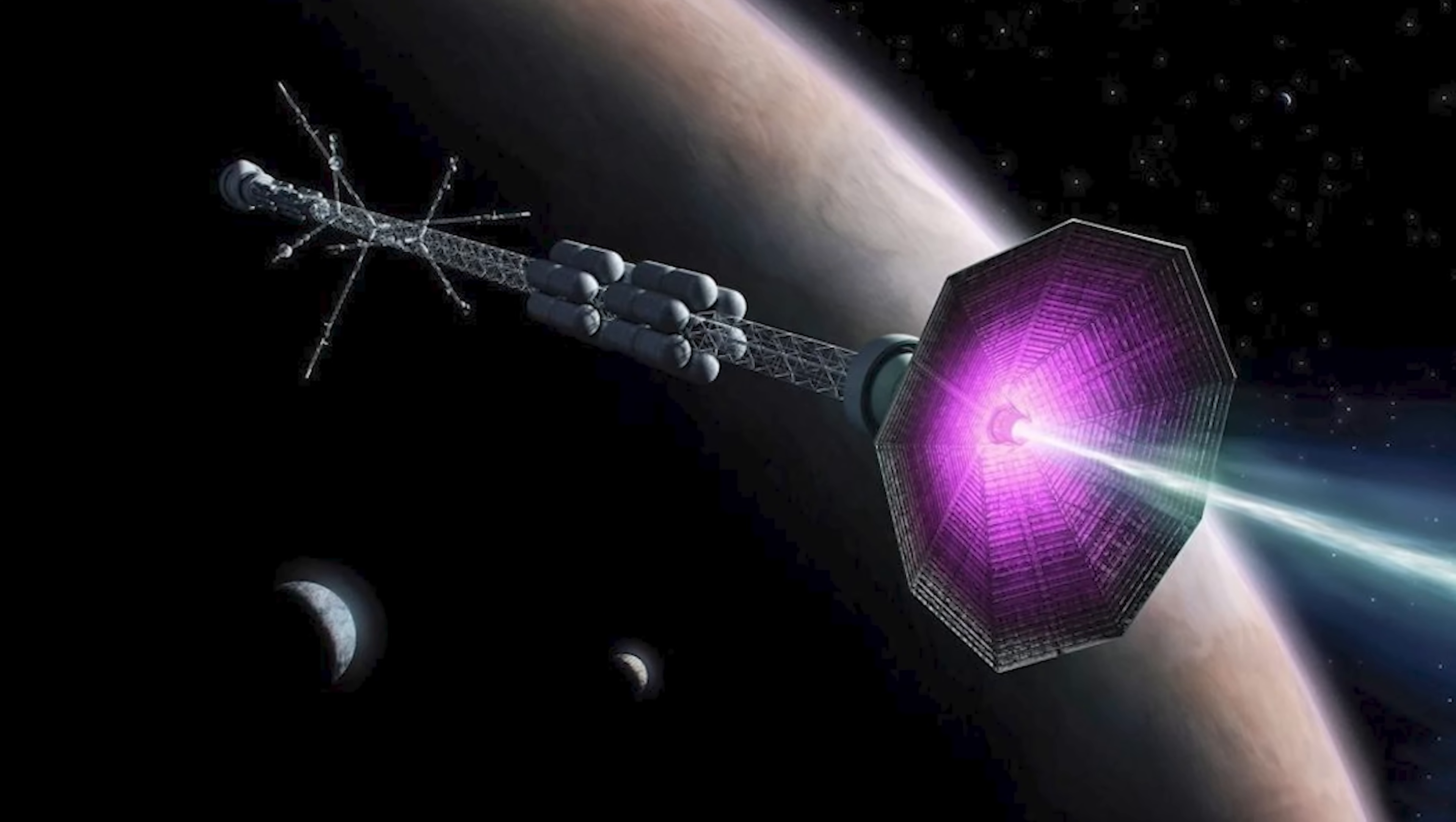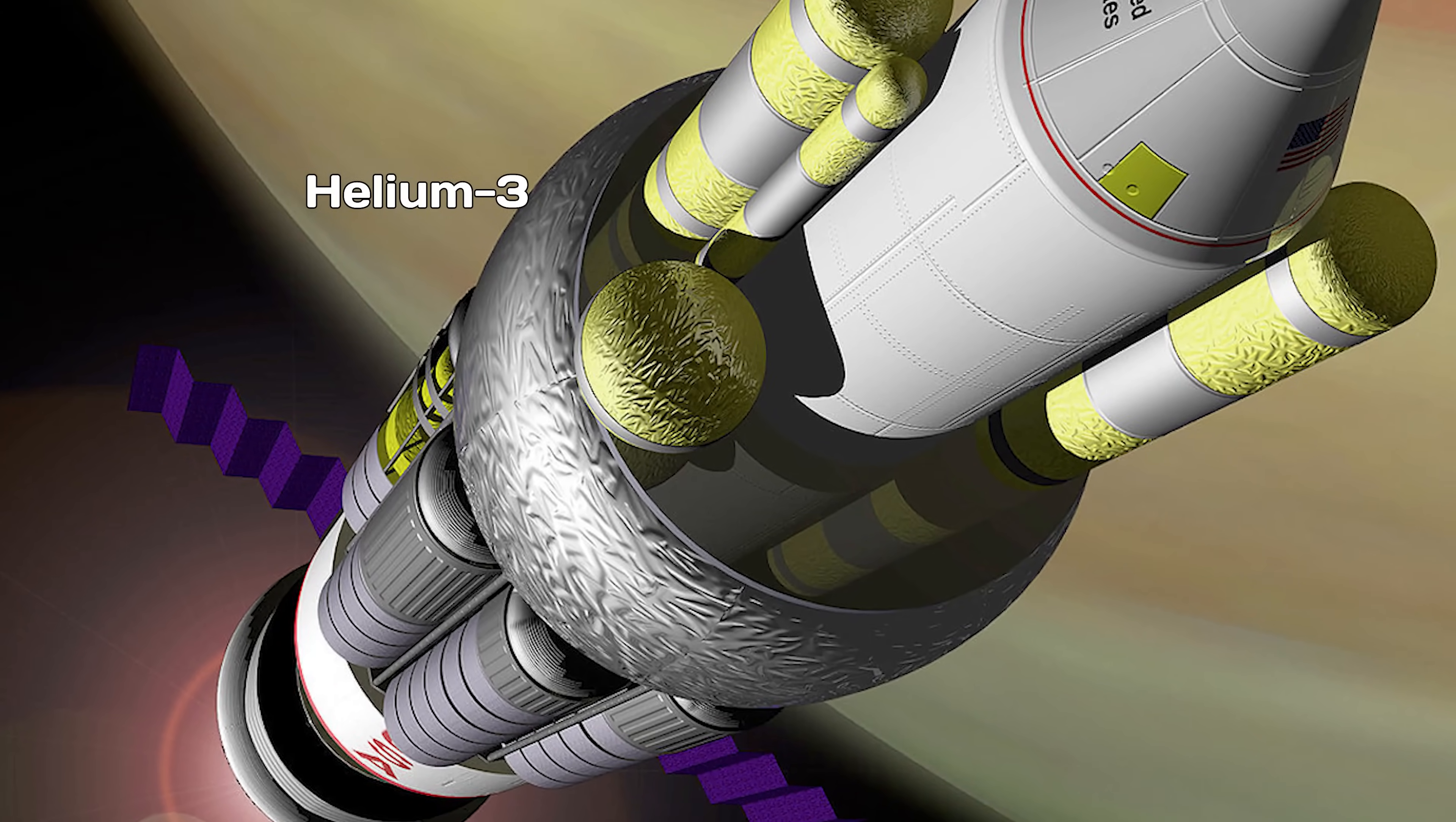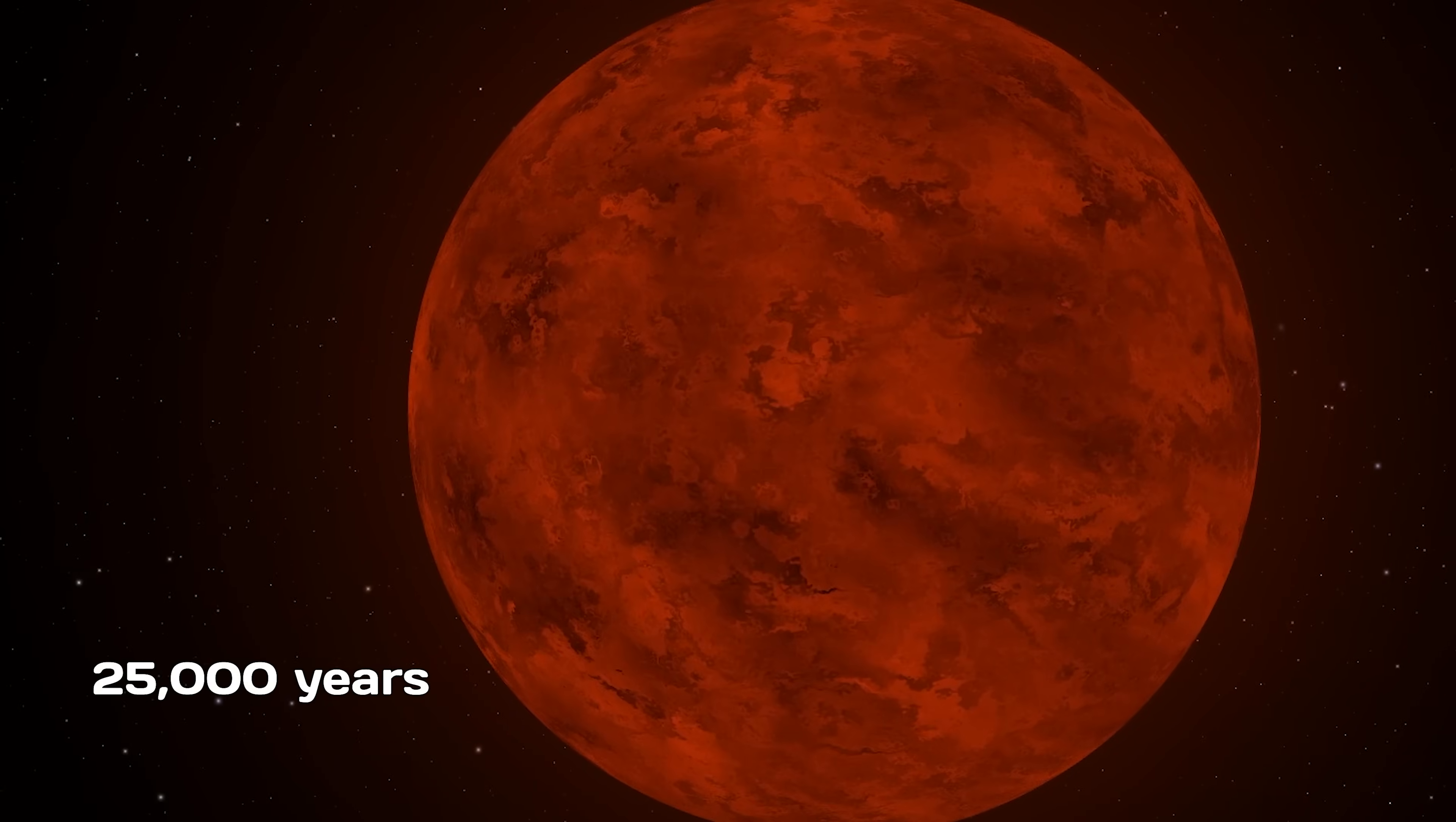Fusion rockets are also a promising technology. But so far, we don't have any that actually work. Still, if we could harness the energy from fusing helium-3 and deuterium, we might achieve sustained speeds comparable to the Parker Solar Probe, around 0.06% the speed of light. At that rate, it would take roughly 25,000 years to reach Proxima Centauri B.